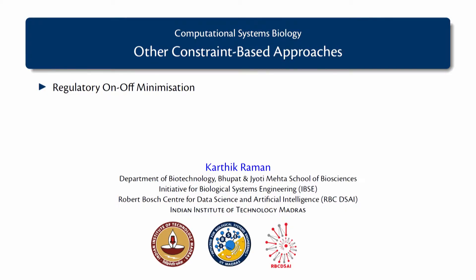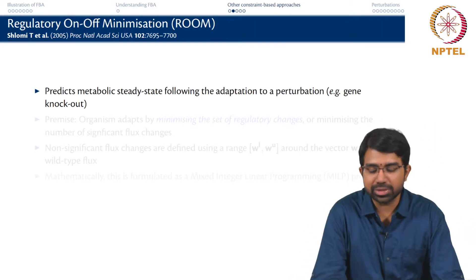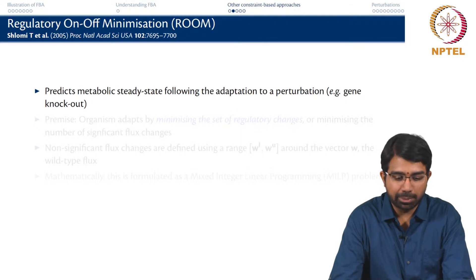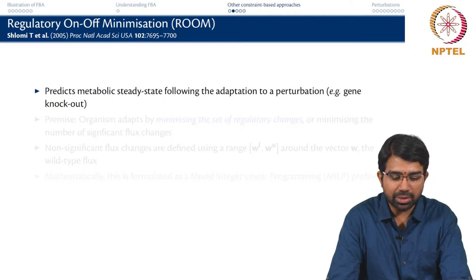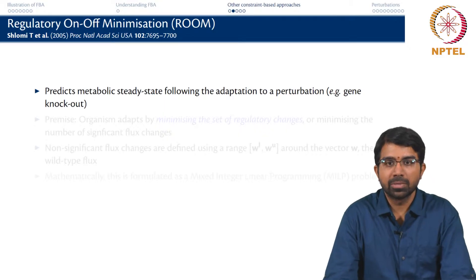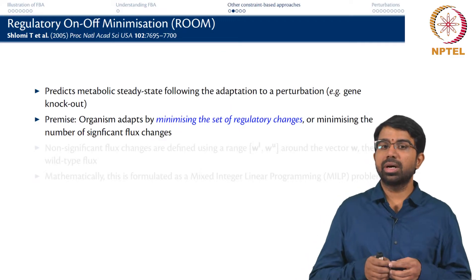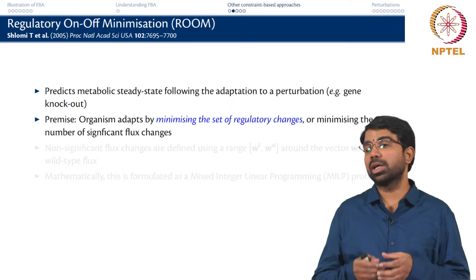In this lecture, we will discuss another constraint-based approach which is similar in spirit to minimization of metabolic adjustment we saw in the previous lecture, but this tries to minimize the number of flux changes from a given flux vector. This alternative approach is closer in spirit to the L0 norm optimization and tries to predict the metabolic steady state following adaptation to a perturbation. The premise is that the organism adapts by minimizing the set of regulatory changes.